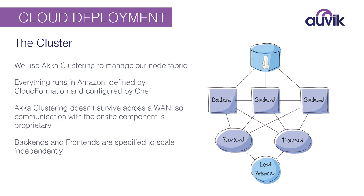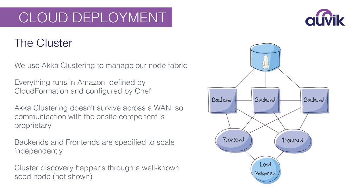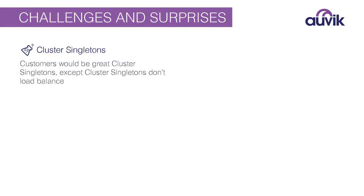For cluster discovery, you have to be able to join a cluster. We make a cluster out of a single seed node — a very well-defined, stable node that everyone can join. He doesn't run our application; he just runs ACA cluster. That's our architecture at the 30,000-foot view to give you an idea of what we're dealing with. But we did hit some interesting challenges and surprises as we went forward.